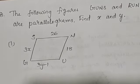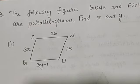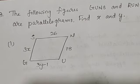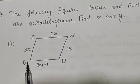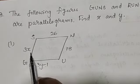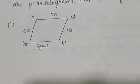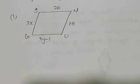Exercise questions 6 and 7 you should write as assignment. Now we are moving to the 8th question. The question gives the following figures — GUNS and RUNS are parallelograms, find X and Y. This is the first figure, the parallelogram GUNS. Here side GU is 3Y minus 1, side UN is 18, side SN is 26, and side SG is 3X. We have to find X and Y. We know in a parallelogram the opposite sides are equal.